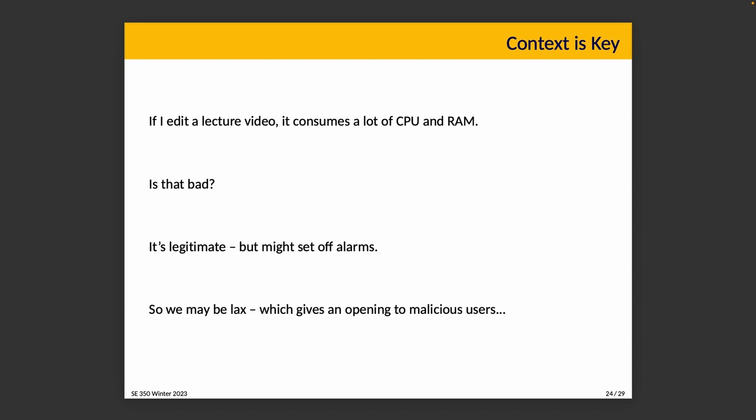So maybe you're wondering what I mean by that. Let's put it like this: I shoot a lecture video and record it. I do some editing and then I need to render it. If I edit that lecture video, it consumes a lot of CPU and RAM. Is that bad? I'm going to say no. It might use a large amount of memory putting together all the pieces of content, and the render is a CPU-intensive task — it might max out all the CPUs in my laptop for quite a while.